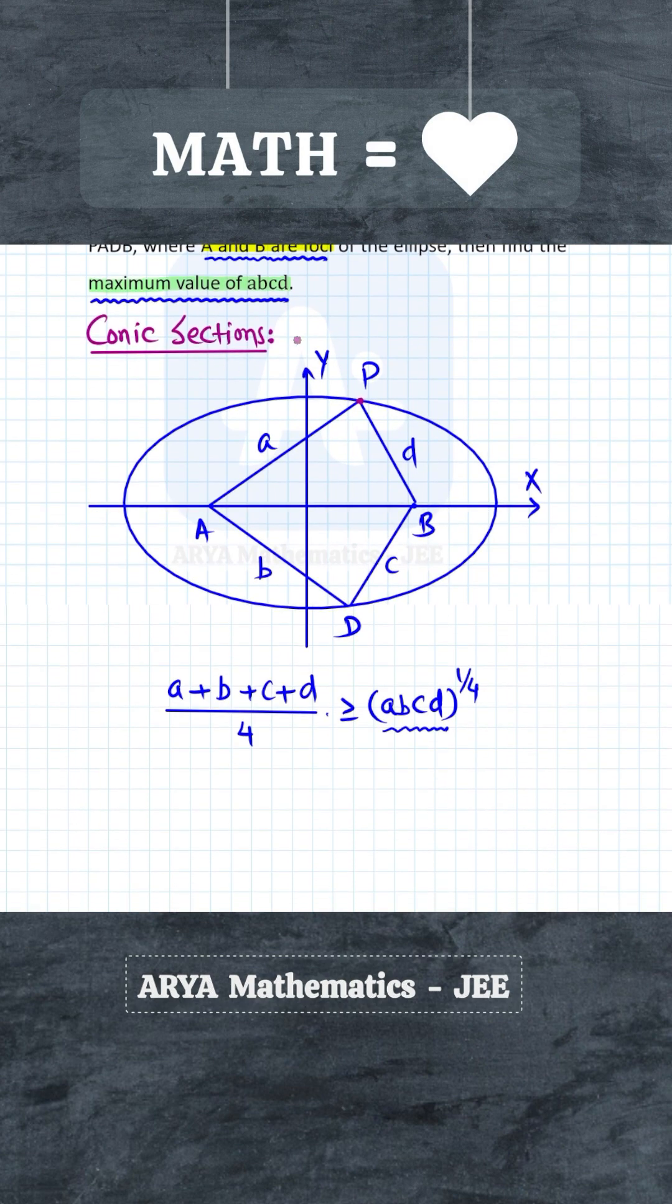Because point P is on the ellipse, PA + PB—that is, a + d—this must be the length of the major axis, which is 4. So in place of a + d, we can write 4.